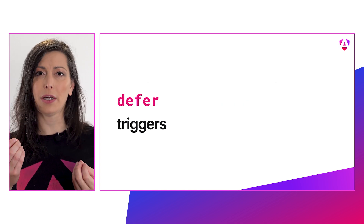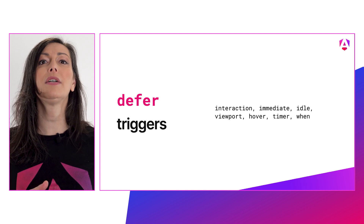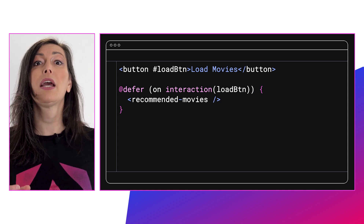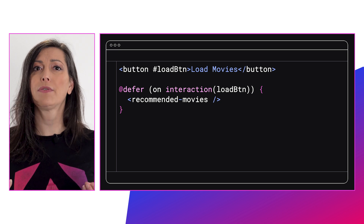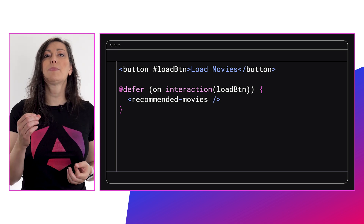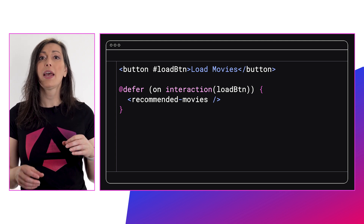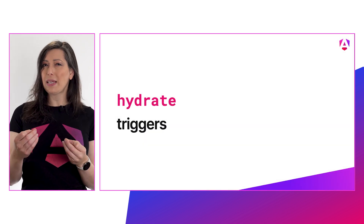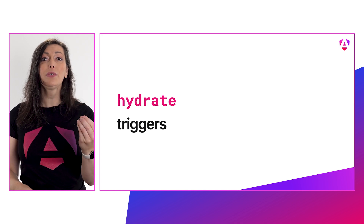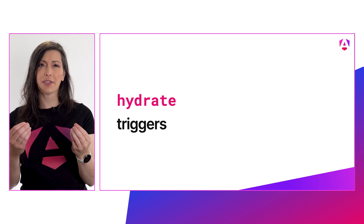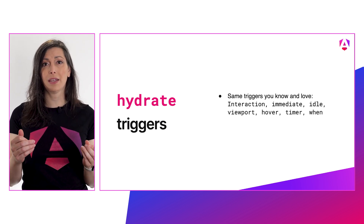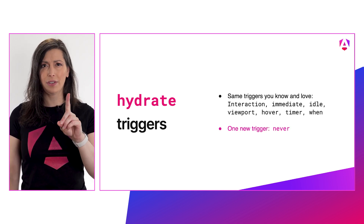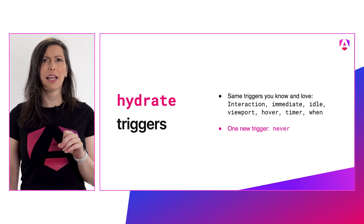Defer blocks have a set of triggers which you're already probably familiar with: immediate, idle, timer, interaction, viewport, and hover. As a quick recap of how defer blocks work — in your template you can use `@defer` and then add one of these triggers, for example `on interaction`. This trigger specifies when the deferrable view dependencies are fetched, and once they've been fetched the placeholder content goes away and the main content is rendered. Incremental hydration builds on this functionality and adds a new set of similar triggers called hydrate triggers — they're all the same exact triggers, with one additional one: never. More on that later.